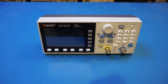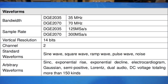The DGE2000 series has two models at the moment. The DGE2070 has a sample rate of 300 mega samples per second, and the highest frequency it can output is 70 MHz when the output waveform is sinusoidal. The other model is the 2035, which has half the sample rate at 150 mega samples per second, and the maximum output frequency is 35 MHz.